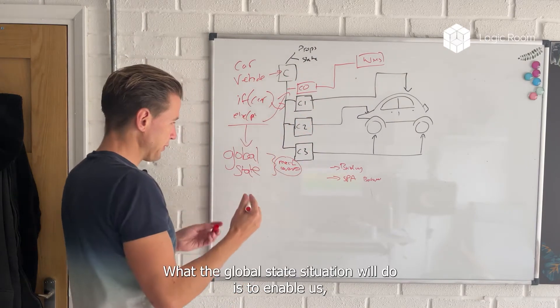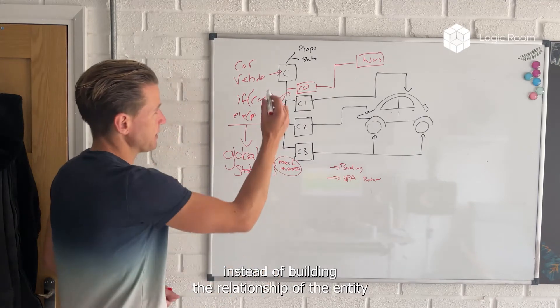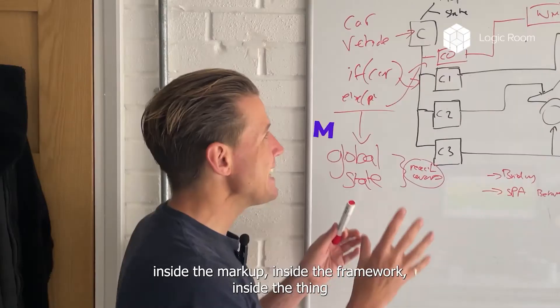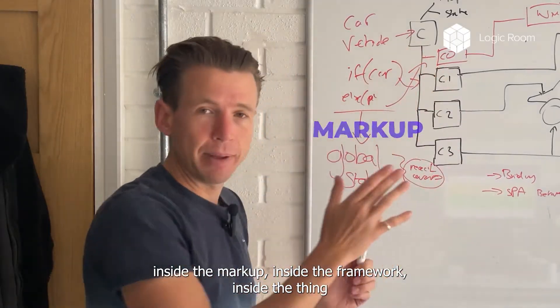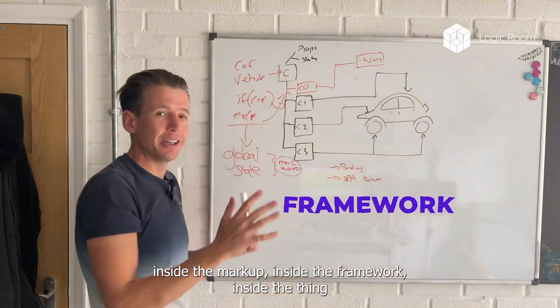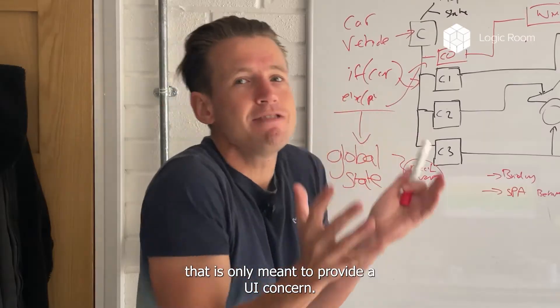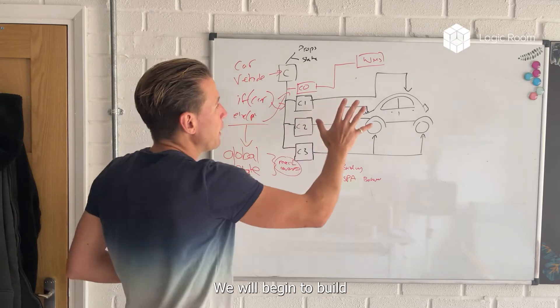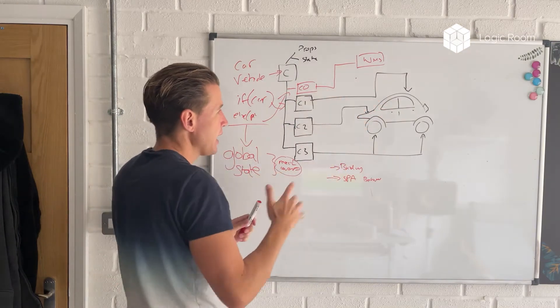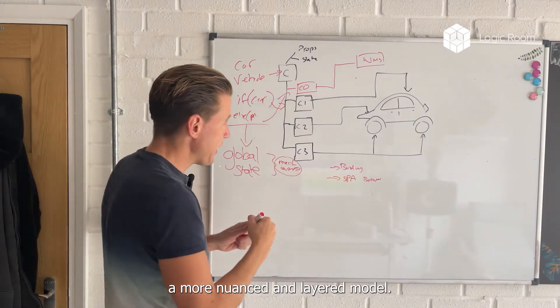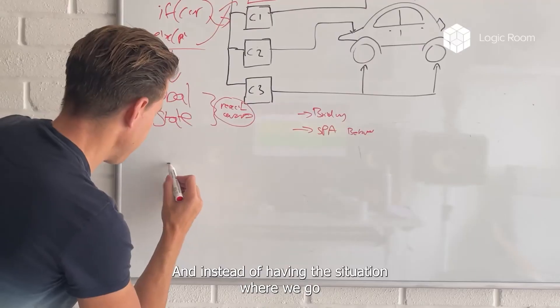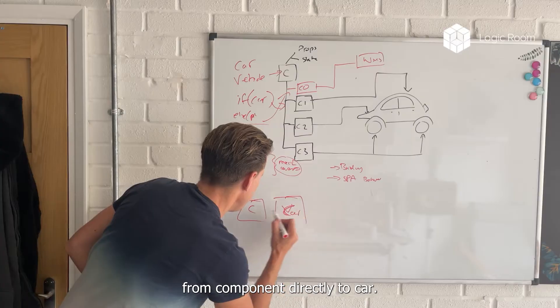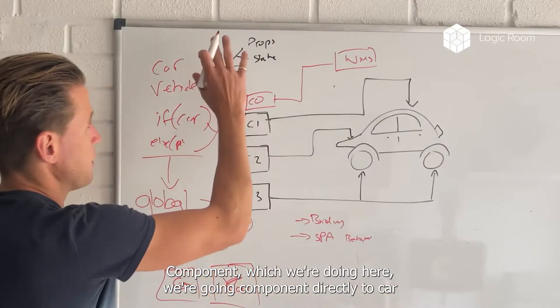Let me just explain the difference that global state will provide to this situation. What the global state situation will do is enable us instead of building the relationship of the entity inside the markup, inside of the framework, inside of the thing that is only meant to provide a UI concern, we will begin to build a more nuanced and layered model.